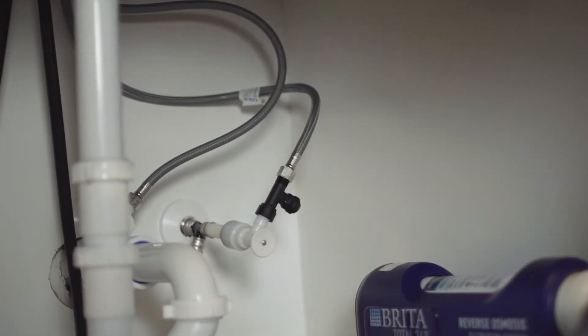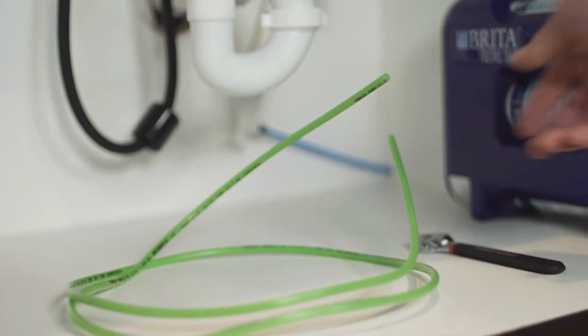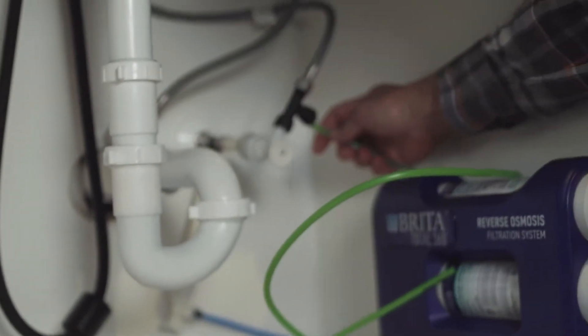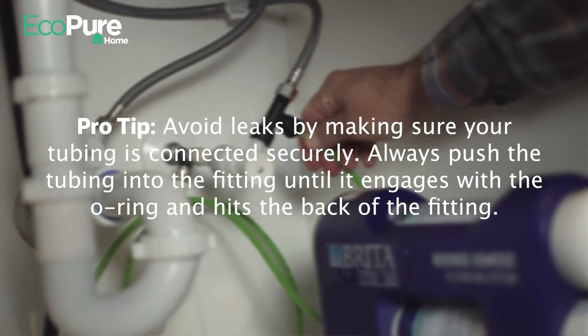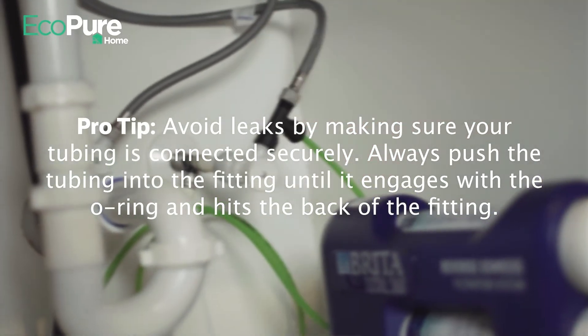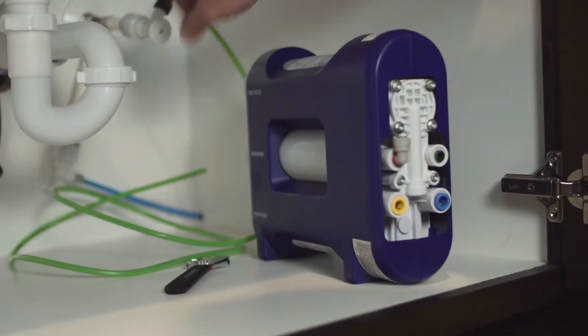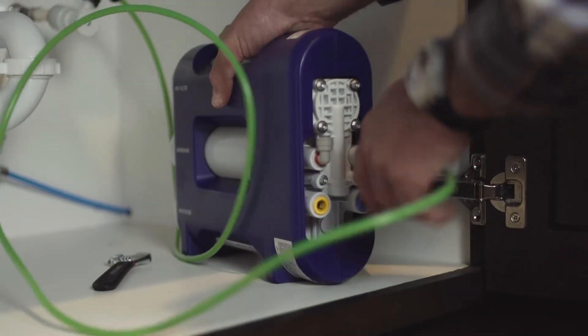Finally, attach the green tubing from your RO unit to the remaining connection point by pushing it into the fitting until it stops or seats. You should feel the tubing stop, then pull firmly on the tube to ensure it's secure. The other end will eventually connect to the RO system.